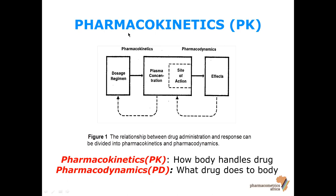Where the major source of variability lies will vary from drug to drug. If the major source is pharmacokinetic, then by measuring the plasma concentration we can account for a large amount of variability between the dose administered and the effect seen. If most variability is in the pharmacodynamics, then plasma concentration will not be such a good predictor of the outcome. Pharmacokinetics is how the body handles the drug - how it is absorbed, distributed and eliminated. Pharmacodynamics is what effect the drug has on the body.